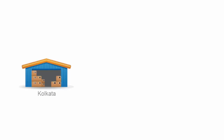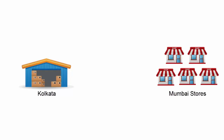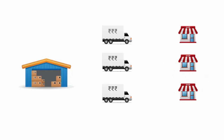Say you have a warehouse in Kolkata and you have to transfer the goods to stores in Mumbai, which means you have to create delivery chalans for each of the stores in Mumbai. For every store there would be a separate transportation charge as the goods are going directly from the warehouse in Kolkata to the stores in Mumbai. This results in huge transportation charges.